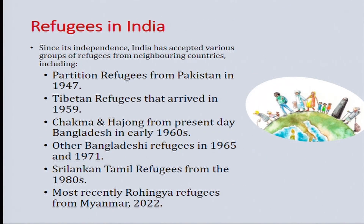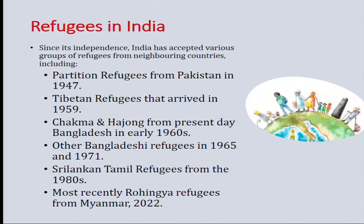Let us look at the various refugees in India. Since its independence, India has had many refugees at different points of time: partition refugees from Pakistan in 1947, Tibetan refugees that arrived in 1959, the Chakma and Hajong from present-day Bangladesh in the early 1960s, other Bangladeshi refugees in 1965 and 1971, Sri Lankan Tamil refugees from the 1980s, and most recently the Rohingya refugees from Myanmar in 2022.